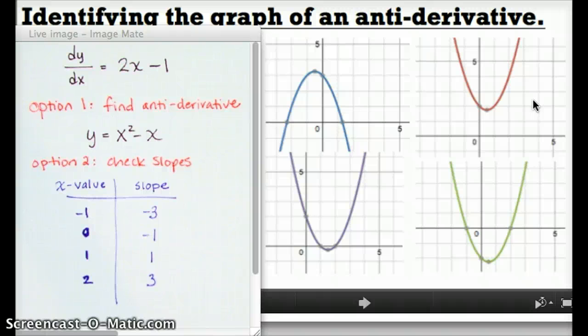Excellent. So maybe that was surprising. It turns out there's two functions that work. There's two functions that both match all of the slopes we checked.